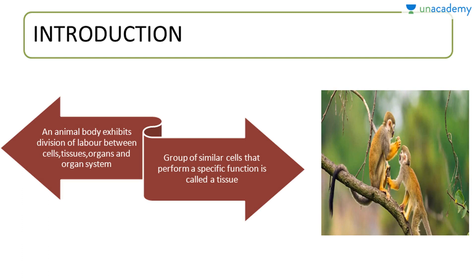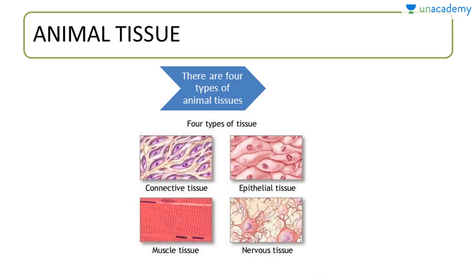An animal body exhibits division of labour between cells, tissues, organs and organ systems. A group of similar cells that perform a specific function is called a tissue. We will learn about animal tissue in this chapter.